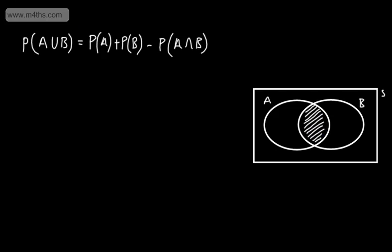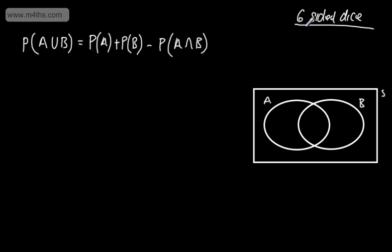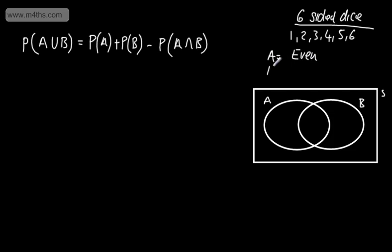Let's consider the particular example from the last video — rolling a fair six-sided die. The outcomes were 1, 2, 3, 4, 5, and 6, each equally likely. I'm going to define two different events. Event A is going to be rolling an even number, and event B is going to be rolling a square number.